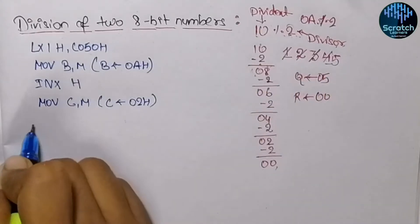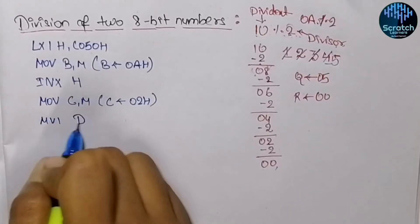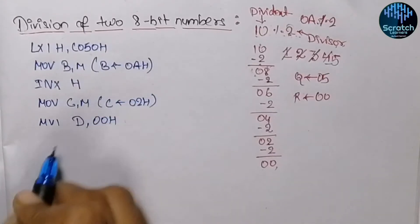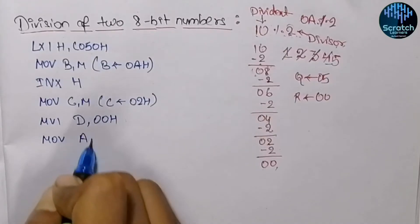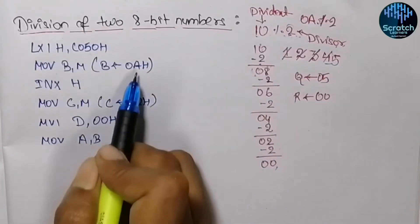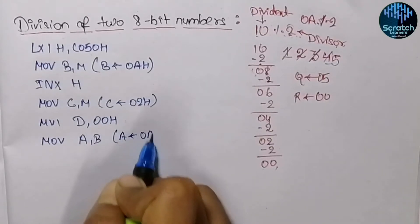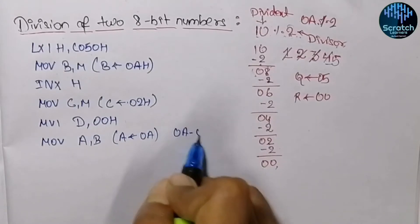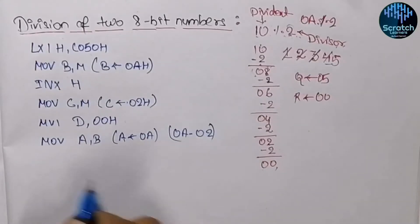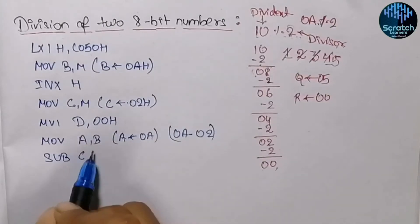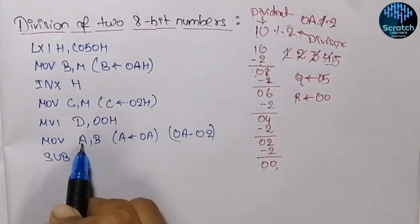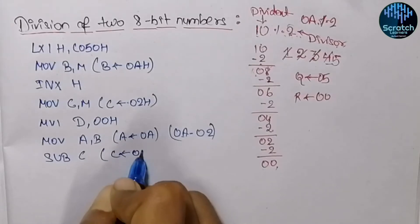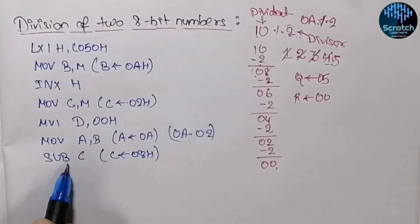To store the quotient we initialize register D with 00 hex using MVI D, 00 hex. Now the dividend is moved into the accumulator so we can perform the subtraction. Since we have 0A hex in the accumulator, we subtract the divisor using SUB C — the content of register C is subtracted from the accumulator — giving 0A minus 02 hex, which equals 08 hex.